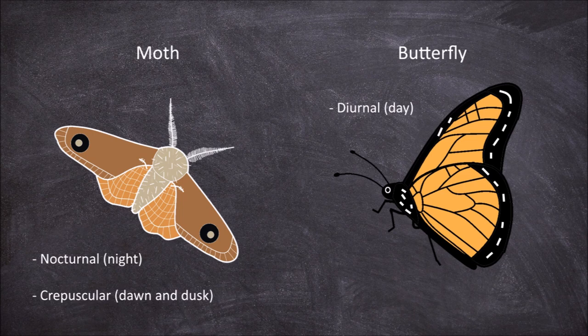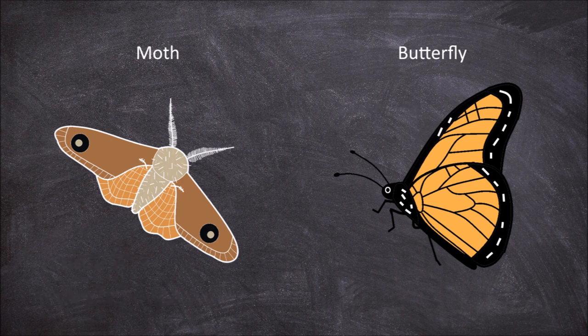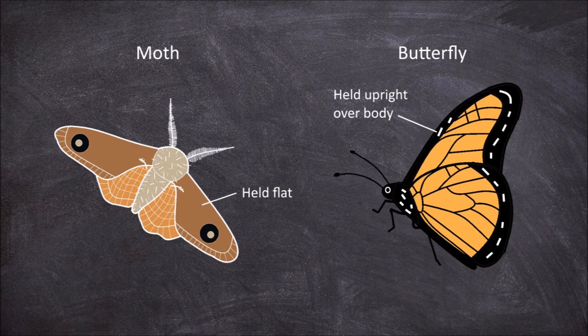The next two features relate to the wings. The first is how the wings sit at rest: in most but not all butterflies they hold the wings up over the body, while in most moths they usually have their wings out flat. The second feature relates to colouration — butterfly wings are often a lot more colourful than moths, but this is not always the case.